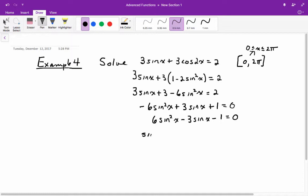So sine of x, which is like our variable here, is equal to negative b, so negative of negative 3 is 3, plus or minus b squared, subtract 4ac, all over 2 times 6.